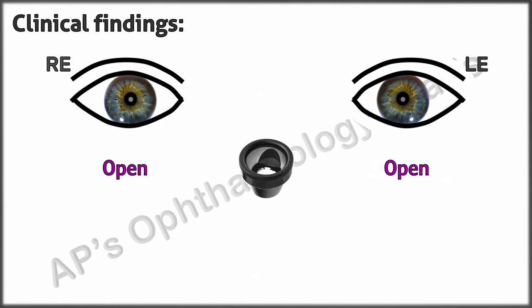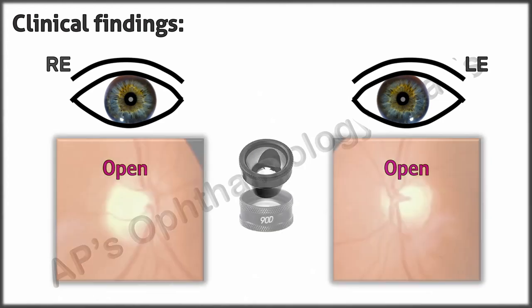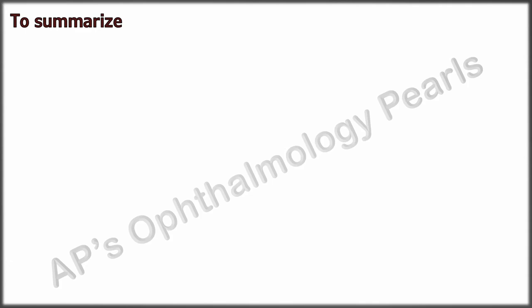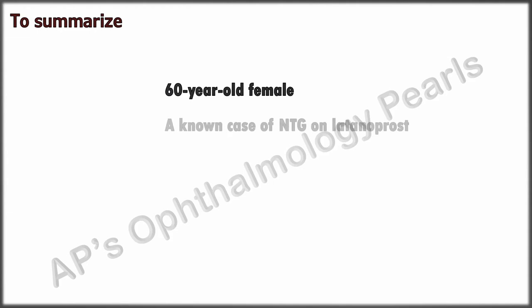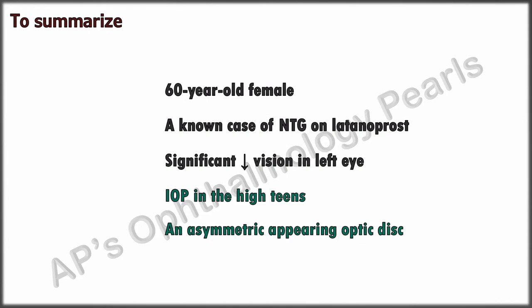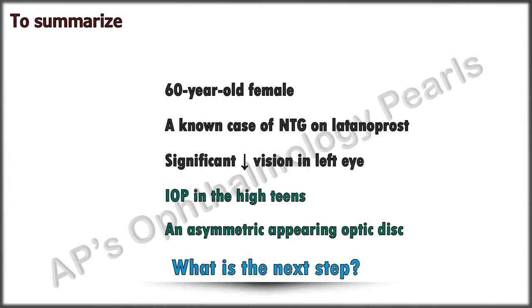Angles were open with no significant findings in both eyes. To summarize: a 60-year-old female with a family history of glaucoma, a known case of normal tension glaucoma on treatment, with unilateral significant diminution of vision, IOP in the high teens, and an asymmetric appearing optic disc. The obvious next step is to get the visual fields, so while our patient is getting her fields done, let us consider the causes of progression in normal tension glaucoma.